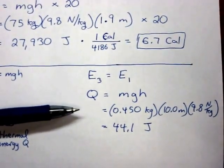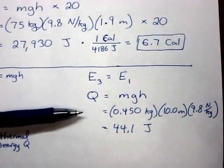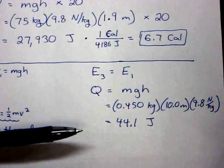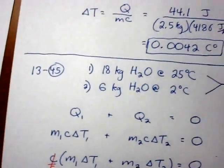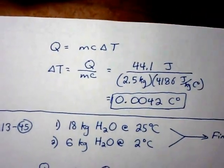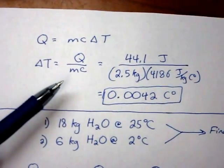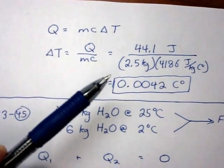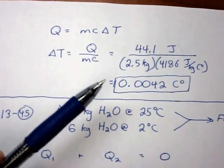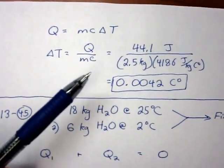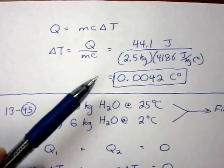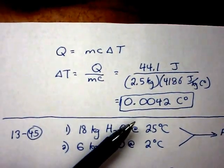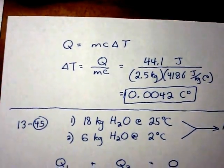When that's given to the water, we get the change in temperature is Q over MC. So the Q, the 44.1 joules. Now we're dividing by the mass of the water, 2.5 kilograms. And the specific heat, 4186 joules per kilogram Celsius degree. So when you compute all that out, you get a change in temperature of 0.0042 Celsius degrees.